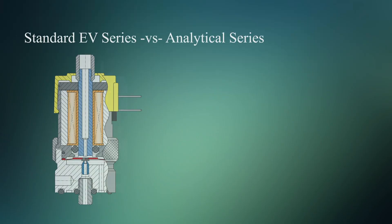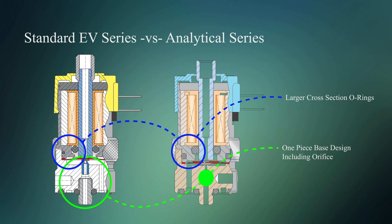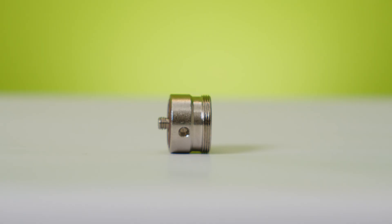Some things that set the analytical series apart are the cross-section of the O-rings. We've increased the cross-section of the O-rings in this valve to increase the leak resistance. This valve also has a one-piece base. We have eliminated a few potential leak points on the base.